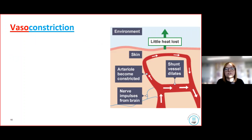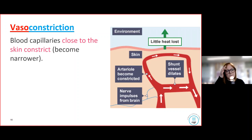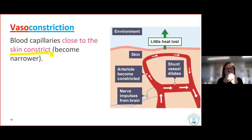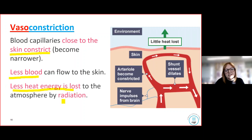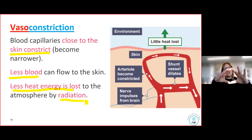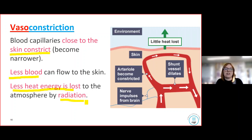The next response is vasoconstriction. This is about the blood capillaries — the vaso part — and constriction means to become narrower. When our body temperature decreases below 37 degrees, our blood capillaries become narrower — they constrict. That process is called vasoconstriction. Because of that, less blood flows to the skin, which means less heat energy is lost by radiation. It's the opposite of vasodilation: when they dilate we're hot and more heat is lost; when they constrict we're cold and less heat is lost.